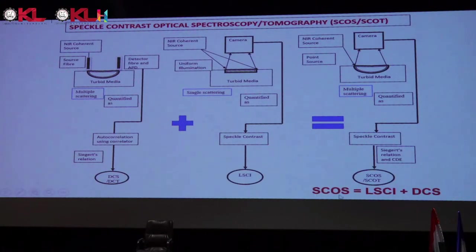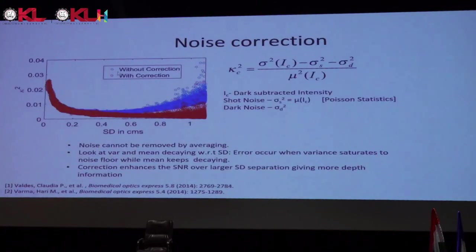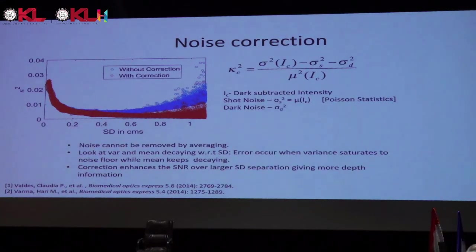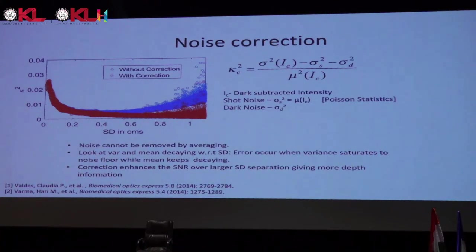We thought: why not merge the two imaging modalities — LSCI and DCS? In laser speckle we use uniform illumination and measure speckle contrast; in DCS we use autocorrelation. Why not use a focused laser as in DCS but measure speckle contrast, so we can use a camera without expensive detectors? We call it SCOS — Speckle Contrast Optical Spectroscopy. This idea was invented at the Institute of Photonic Sciences in Barcelona, Spain, and I was part of that project.